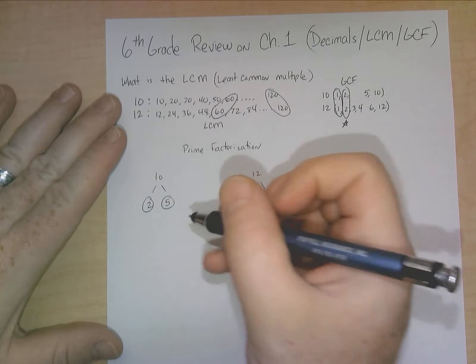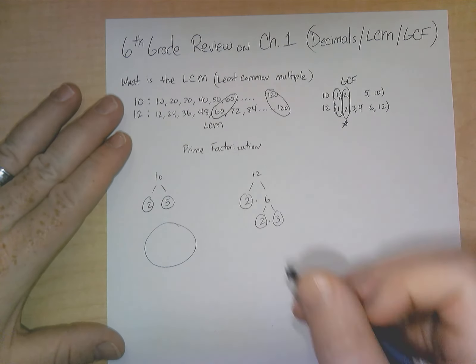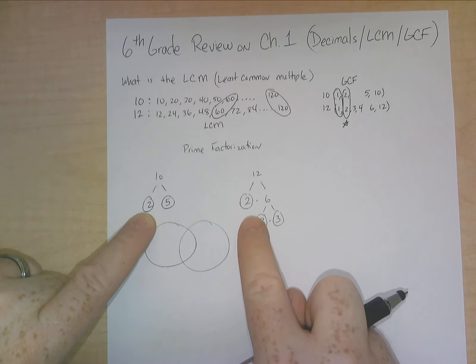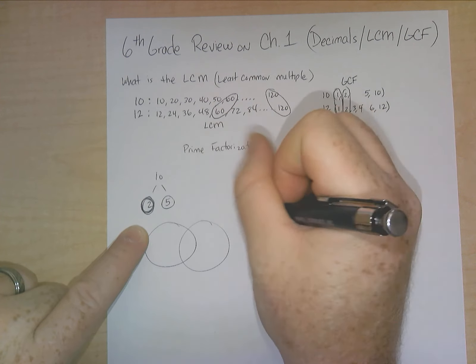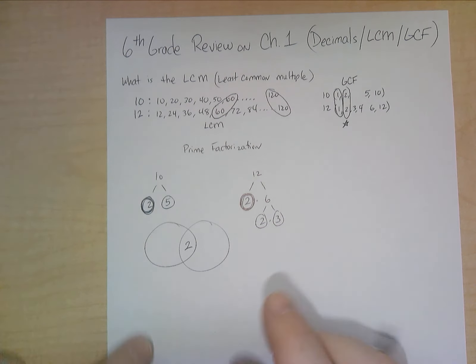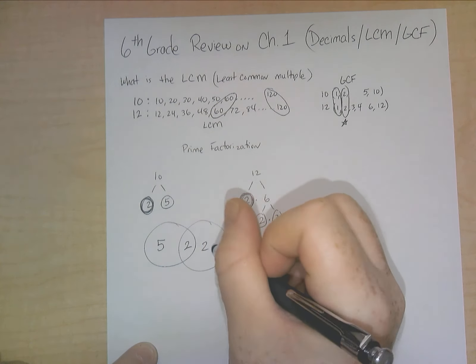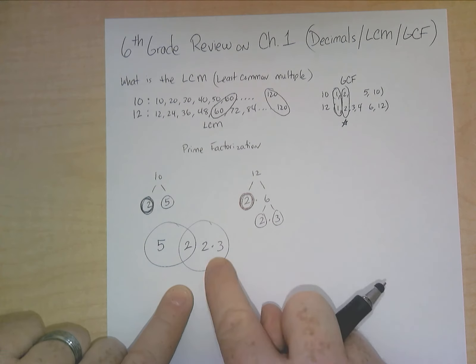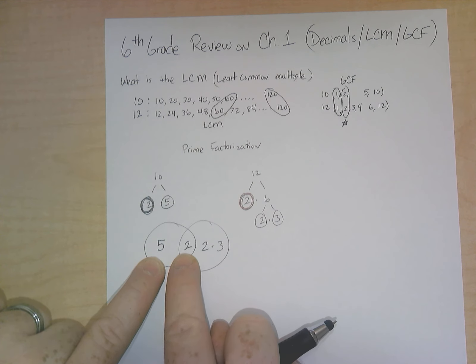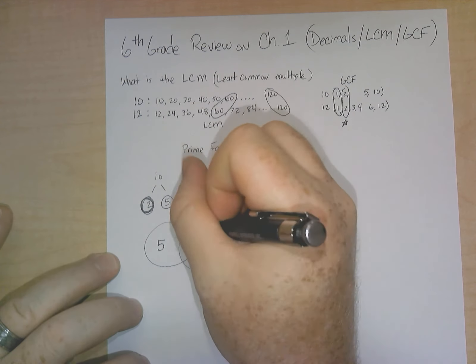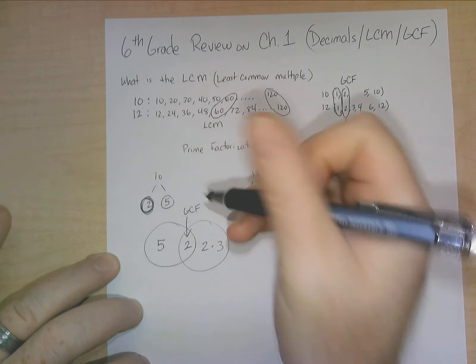And so here's the Venn diagram. So this circle represents 10 and this circle represents 12. And then what you do is you find out, okay, what do they have in common? They do have 1, 2 in common. So that's going to go in the middle. That's what they both share. But what they don't have in common is going to go on the outside in their own respective circles. So 2 and 3. So 2 times 2 times 3, that gives you the 12 circle. And then 2 times 5, I know it's a little bit backwards here, but 2 times 5 gives you the 10 circle. So this is what they have different from each other, and this is what they have in common.